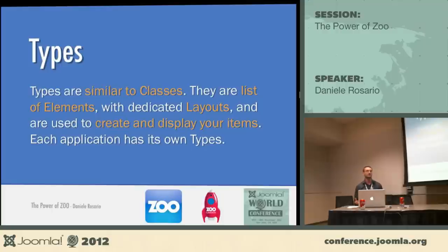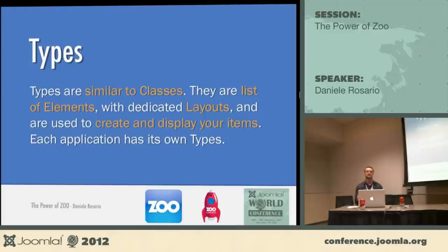Each application has types. Types are content types — what you declare items to be. For example, if you build a product catalog for watches, you create a type called 'watch' and define its fields: color, size, model, strap, whatever. That listing of fields is called a type. Zoo has a very clear UI in the back end to build these types with a drag-and-drop feature.